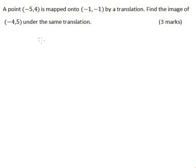A point (-5, 4) is mapped onto (-1, -1) by a translation. Find the image of (-4, 5) under the same translation.